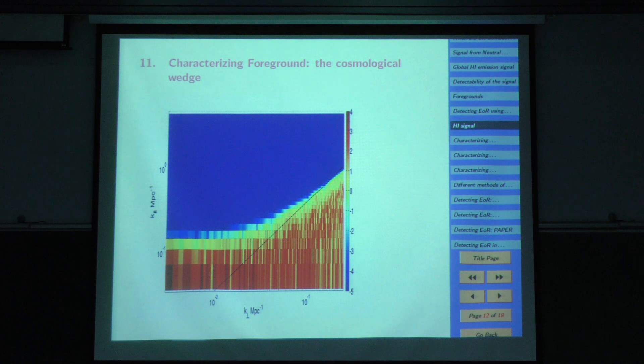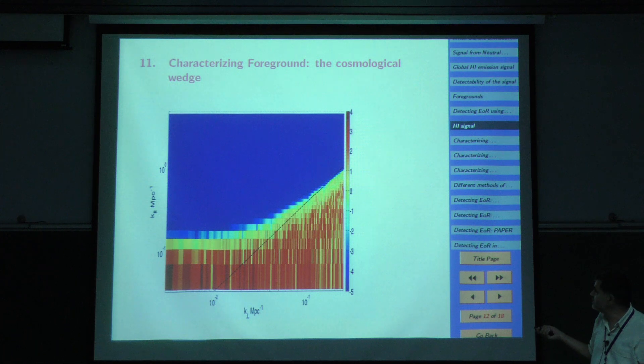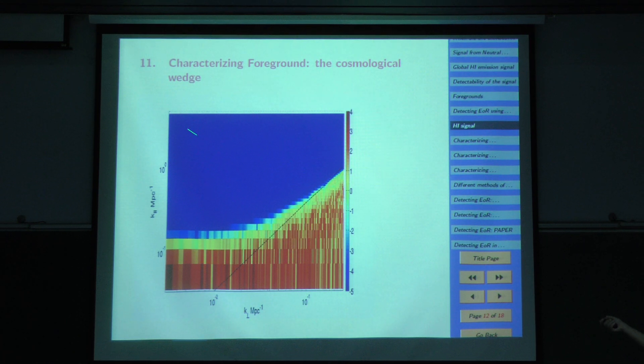So this is how it looks like. This is an idealized simulation. So what you have is, you have taken a set of point sources, distributed it all over the sky, and taken the configuration of MWA. What actually happens is, this is called a wedge. All the foregrounds have been isolated in this region of the wedge. And this region, this very nice-looking region, is almost completely free of foreground. This is called the EOR window. So the point is, H1 signal comes here.